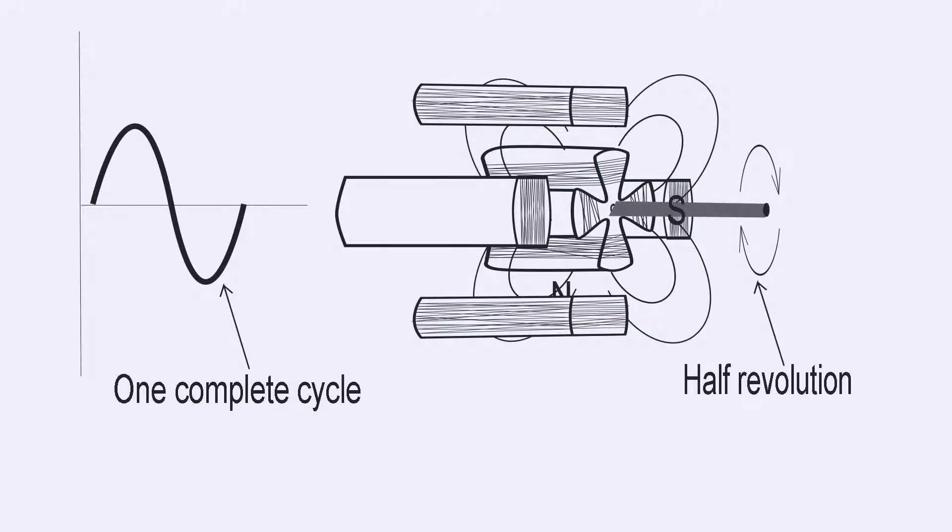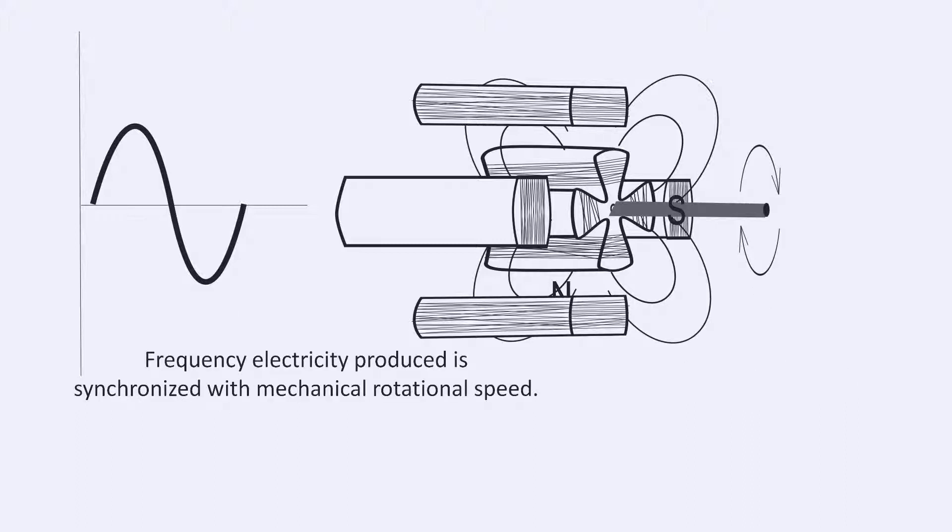For this four-pole system, when the rotor turns half a revolution, the induced EMF takes one complete cycle. It is clear that the frequency of electricity produced is synchronized with the mechanical rotational speed.